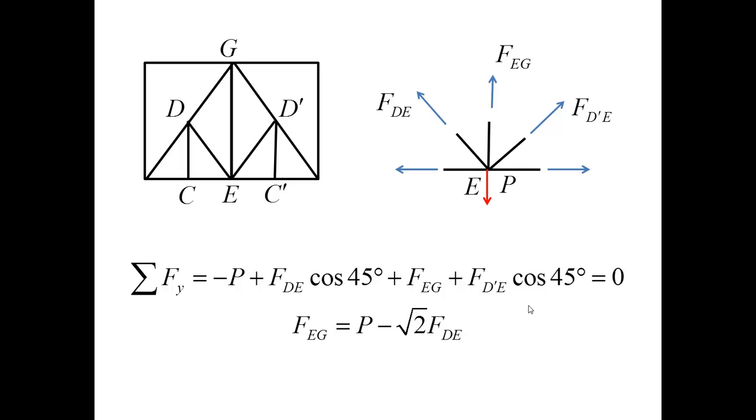Next let me consider the free body diagram for the joint E. Let me remind you that our task is to find the force in GE. Now the free body diagram here involves five forces but due to symmetry this force and this force are equal in magnitude and opposite in direction and the forces FDE and FD prime E also have the same magnitude and the direction is shown. In general what we see that the vertical components coincide while the horizontal components of these forces are opposite.